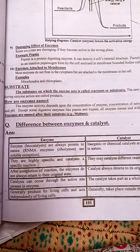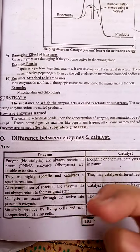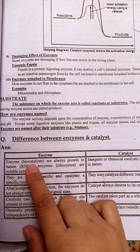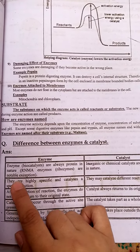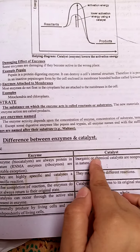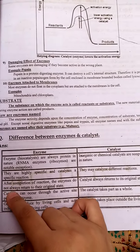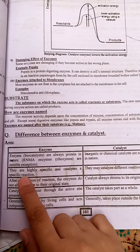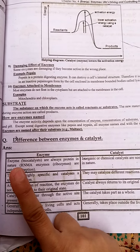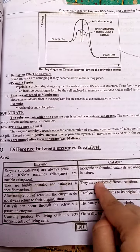Enzymes and chemical catalysts are different. Both speed up reactions, but enzymes (as biocatalysts) are always protein in nature — notable exceptions being RNA enzymes and ribosomes. Inorganic chemical catalysts are non-protein in nature. Enzymes are highly specific, catalyzing only specific reactions, whereas chemical catalysts can participate in many different reactions.